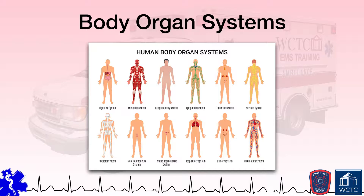Before we begin exploring the individual systems denoted in this graphic, keep in mind that this module provides just a brief overview of these various systems. Each individual human body organ system is very complex and we will explore these individual systems in significant depth in later modules. This module will provide just a cursory overview of the individual organs that comprise these various systems, along with the major functions of these organ systems.